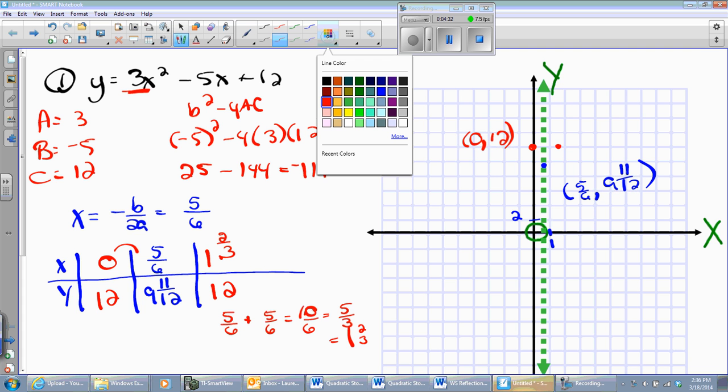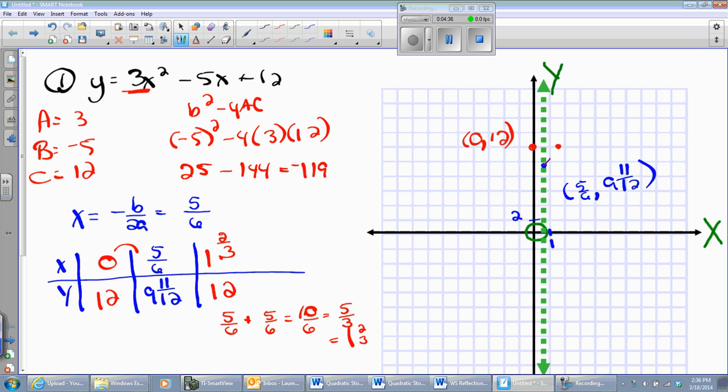And you can laugh at me all you want, but I should be able to draw this parabola decent because the vertex and my two points are relatively close to each other. I don't even need to do my copy thing. Got a little bumpy there, but there you go.